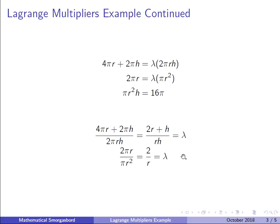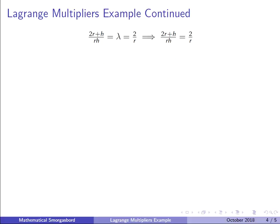Now we have two different expressions for λ, so we can set them equal to each other: (2r + h)/(rh) = 2/r. Multiplying both sides by rh gives us 2r + h = 2h. Then we subtract out h to give us 2r = h.